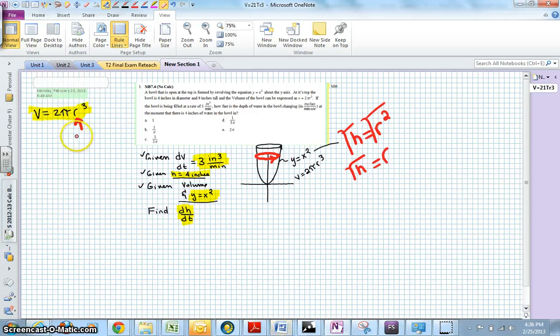So now I can come through and substitute the square root of the h for r. Volume is 2 pi the square root of the h cubed, or we can rewrite that as volume equals 2 pi h to the 3 halves.